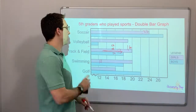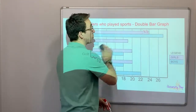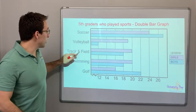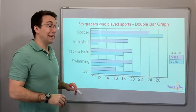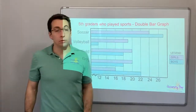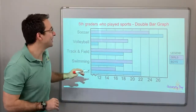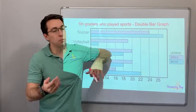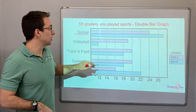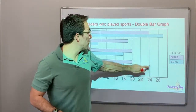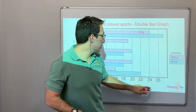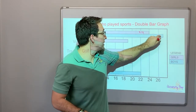This is a double bar graph. The first thing you should notice is that each category — soccer, volleyball, track and field, swimming, golf — has two bars. There's a legend: girls is red, boys is blue. This shows fifth graders who played sports. Soccer: 24 girls, and then boys — 2, 4, 6 — so this is 27.